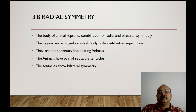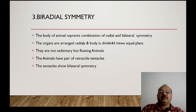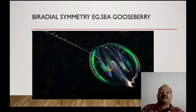The next type of symmetry is bi-radial symmetry. Here the body of the animal represents a combination of radial and bilateral symmetry. The organs are arranged radially and the body is divided into two equal planes. These are not sedentary but free-moving animals. The animals have a pair of rectangular tentacles, and the tentacles show bilateral symmetry.